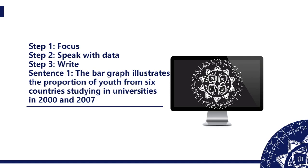While writing the paragraph, if you can't paraphrase the given task, you may change a noun into a verb or a verb into a noun, or change an adjective into an adverb. Now look at the screen — you will see the first sentence example: 'The paragraph illustrates the proportion of young people from six countries studying in universities in 2000 and 2007.' This is a paraphrasing sentence, and the next sentence follows.